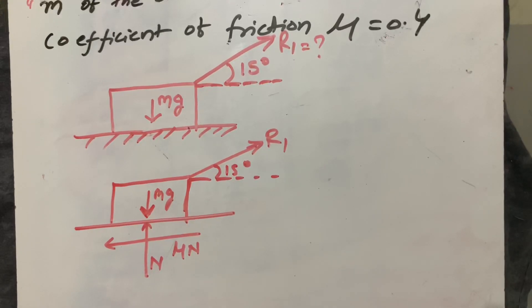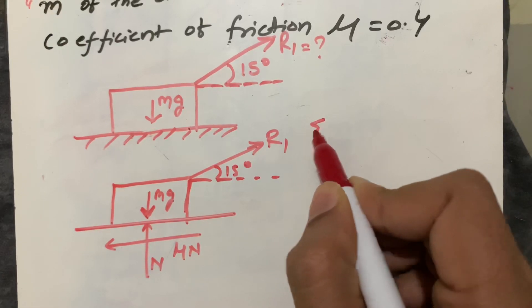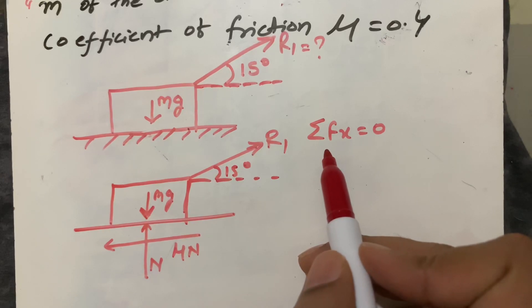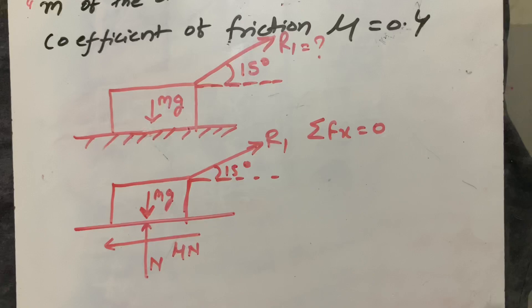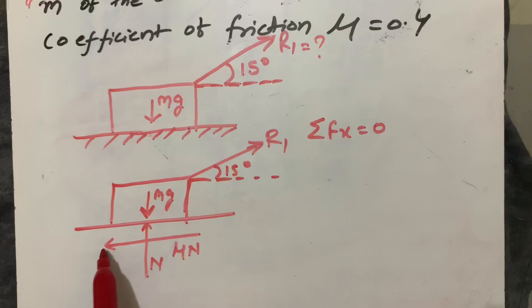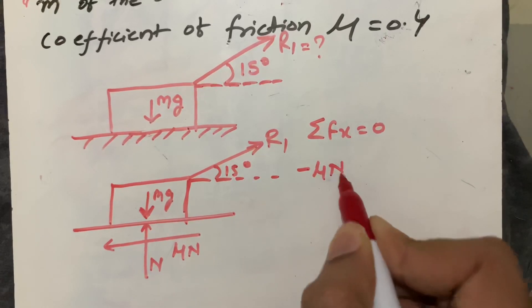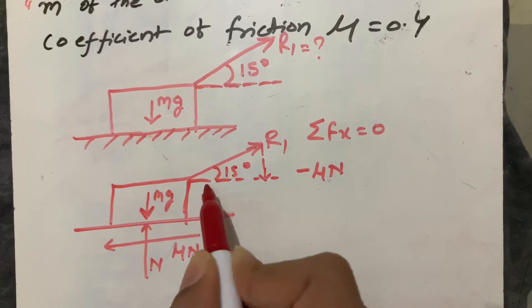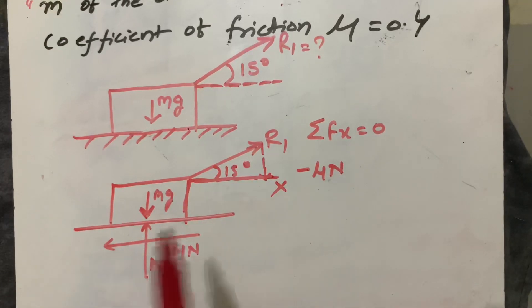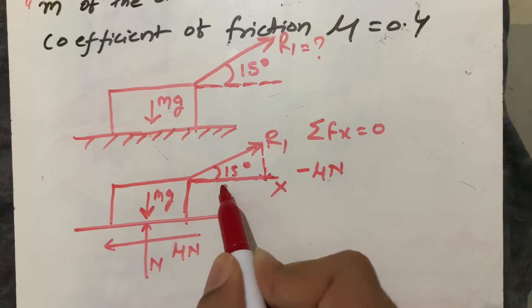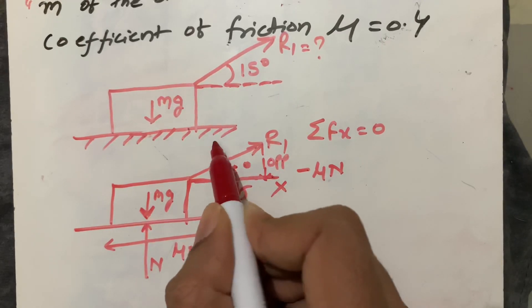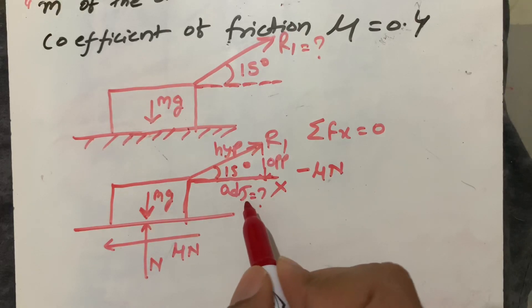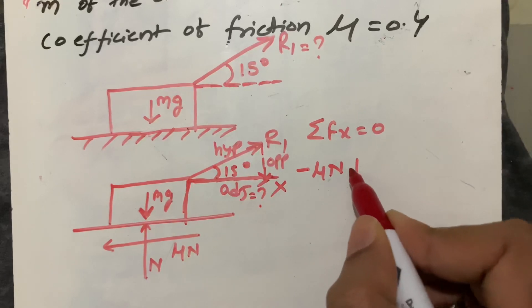First we have to find the equilibrium equation ΣFx = 0, which is the summation of all forces in the x-direction. In this diagram the x-direction forces are: μN is negative because it acts in the opposite direction, and R1 is an inclined force which we resolve along the x-axis. For the angle θ, this is the adjacent side and the hypotenuse, so the unknown is the adjacent component.